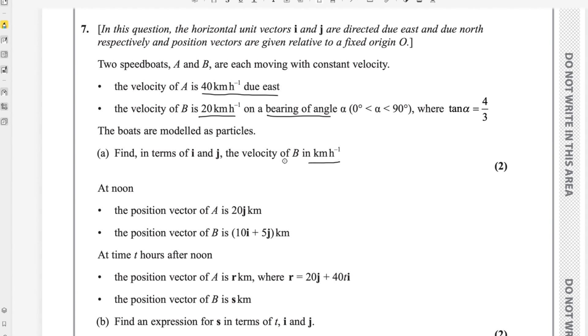We need to find the velocity of B. First of all, let me draw a triangle using tan alpha equals 4 over 3 and the bearing of angle alpha.